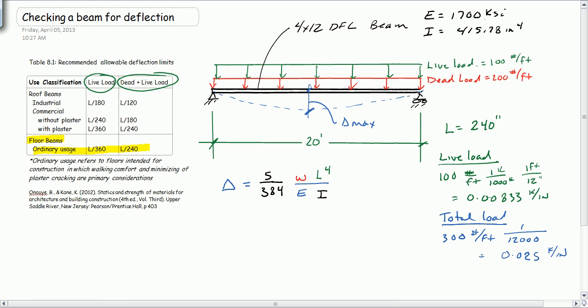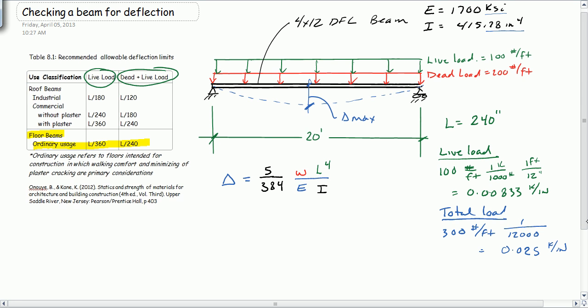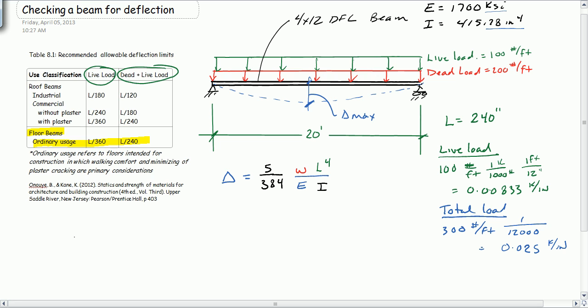E is already in KSI and I is already in inches to the fourth. So what we need to do is we need to do two calculations. First of all, we're going to calculate the live load deflection. Let's do that down here.